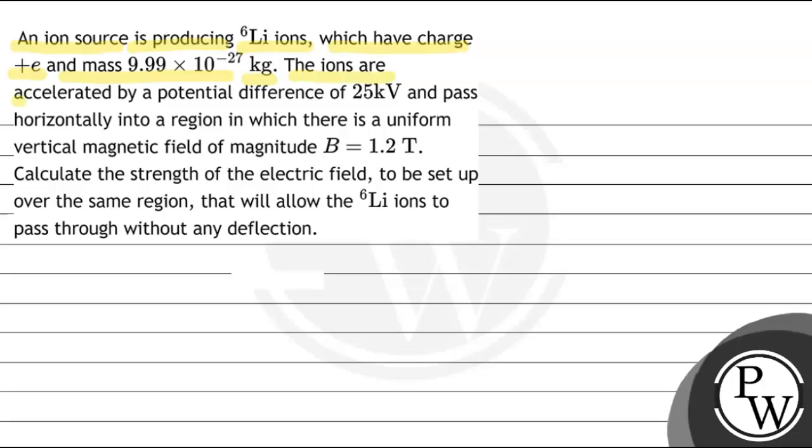The ions are accelerated by a potential difference of 25 kilovolt and pass horizontally into a region in which there is a uniform vertical magnetic field of magnitude B equal to 1.2 tesla.